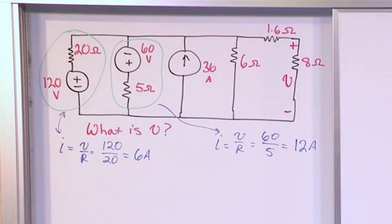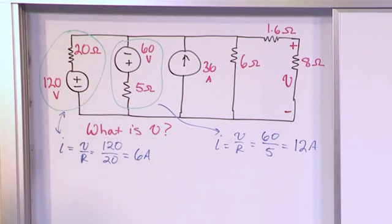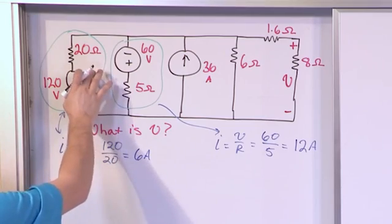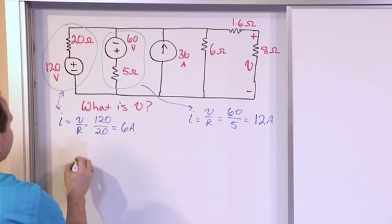So let's redraw the circuit directly underneath. So this voltage source is no longer a voltage source, it is a 6 amp current source. So let me draw that. What direction is the current source going to be?